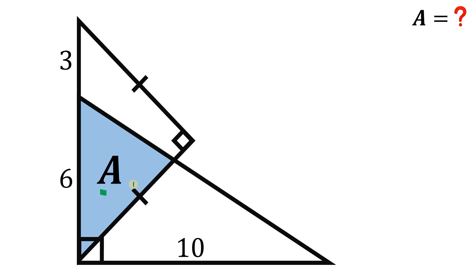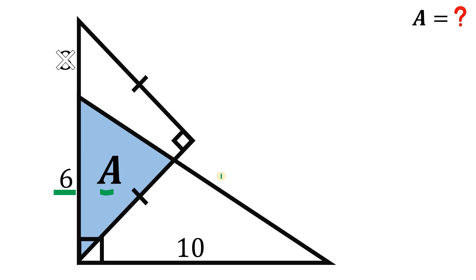All right. Given this figure, the goal is to find the area of this triangle represented as A. In this question, even though we don't know this length, we can still answer it — we don't need the 3 units. We know the base is 6, and we need to find the height of this triangle. If we find the height, we're done.